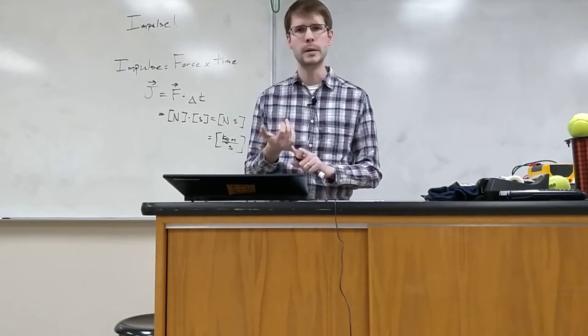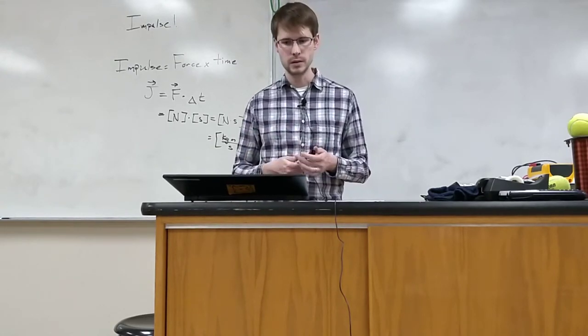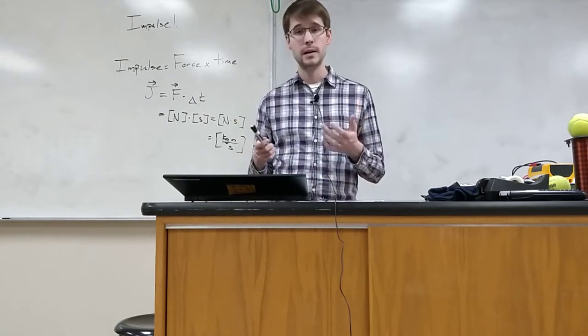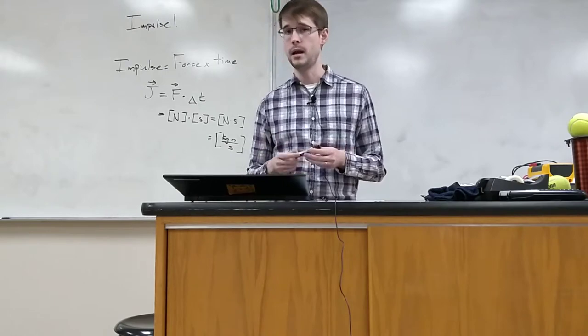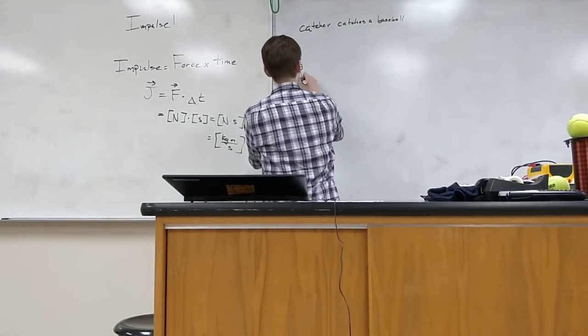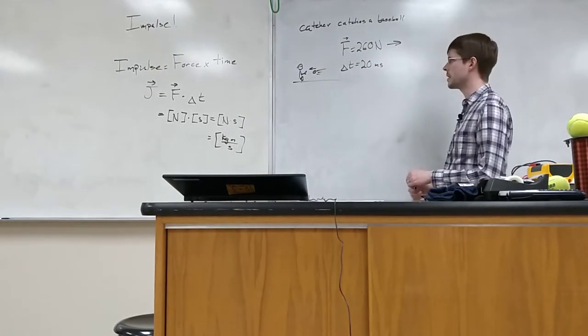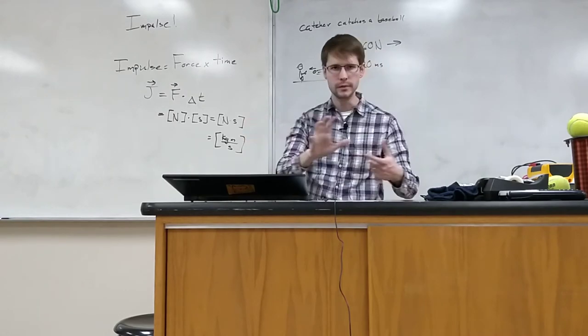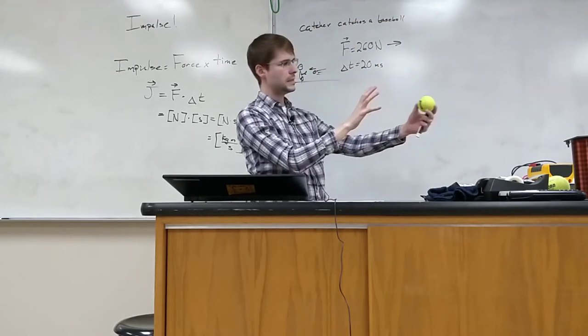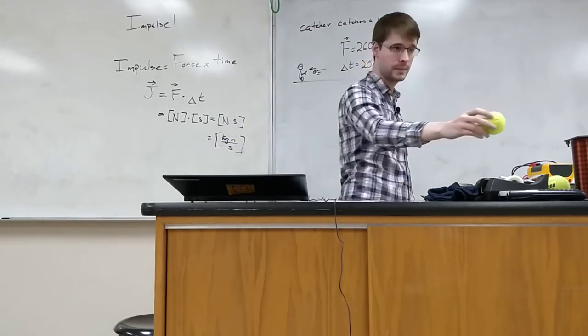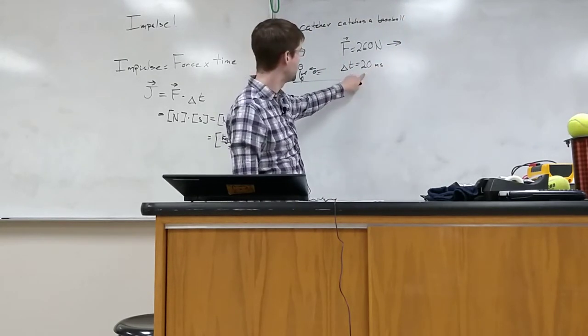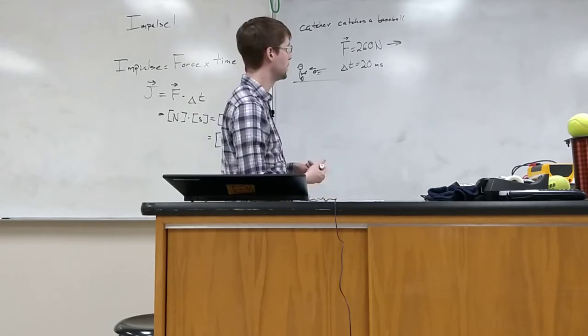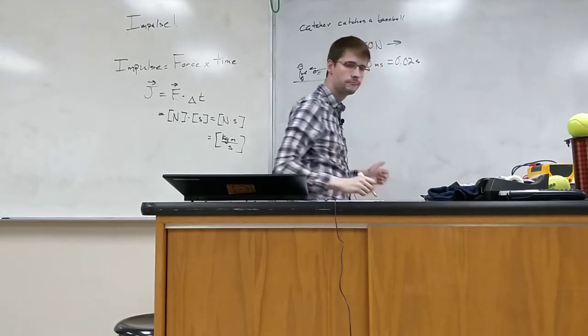And so I just want us to give a quick problem where we practice calculating the impulse for a specific situation. Let's say that we have a baseball catcher that's catching a ball. They're slowing the pitch down with a force of 260 newtons, and they did it in a period of 20 milliseconds. That's a really short amount of time. Alright, so we've got our situation here. We've got our baseball catcher catching the ball. After the ball hits his mitt, he's got to push on the ball. Well, if I line up the same way, he's got to push on the ball to slow it down. So as this ball is flying towards him, he's got to catch it and slow it down by pushing in the opposite direction. So his force is applied to the right of 260 newtons for 20 milliseconds. And if we remember, milliseconds means 1,000th of a second. So 20,000th of a second. If we write this in our standard units, it would be 0.02 seconds.